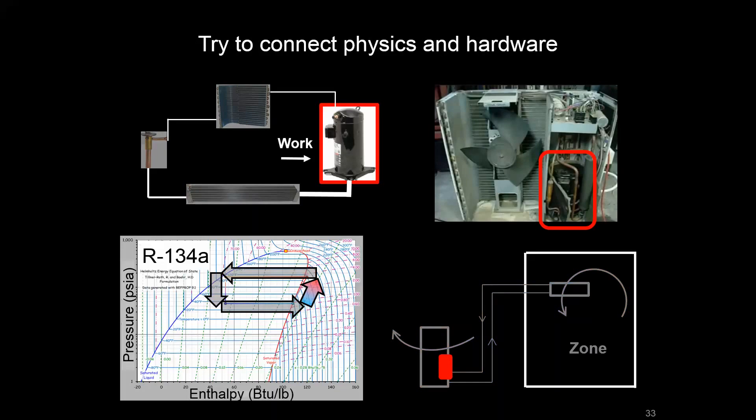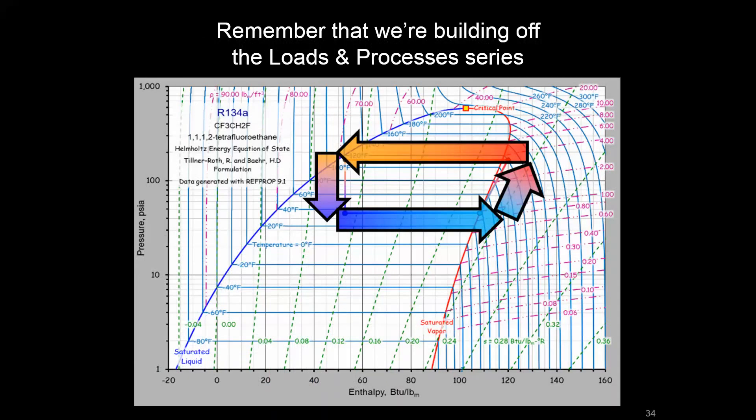We're going to make some connections between the equipment that we see, schematically how we might represent this, and then what it looks like on the saturation chart. So the next lesson, we're going to go step by step, going through these different legs of the process. But remember that we're always building off what we did in the loads and processes section when we're talking about an enthalpy change at a specific point in this process.